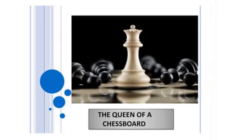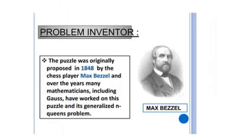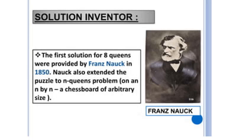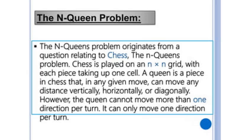Welcome to the presentation. The N-queen problem is used on a chessboard. The puzzle was originally proposed in 1948 by chess player Max Bezzel, and over the years many mathematicians including Gauss worked on it. It was generalized as the N-queen problem. The first two solutions for eight queens were provided by Franz Nauck in 1850, who extended the puzzle to N queens on an N-by-N chessboard of arbitrary size.